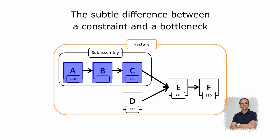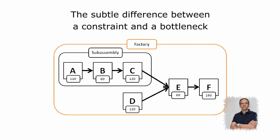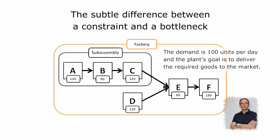In this case, the resources are machines. The whole process needs another resource D, and the final assembly consists of resources E and F. The capacity of each resource is displayed under their ID letter. The demand is 100 units per day, and the plant's goal is to deliver the required goods to the market.